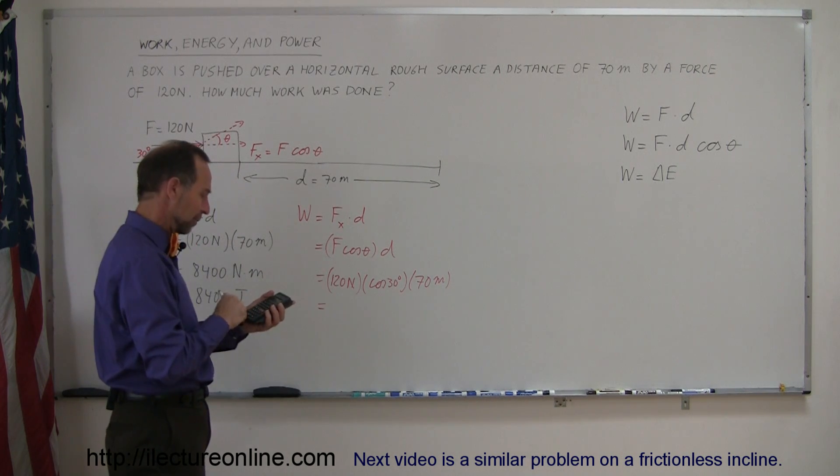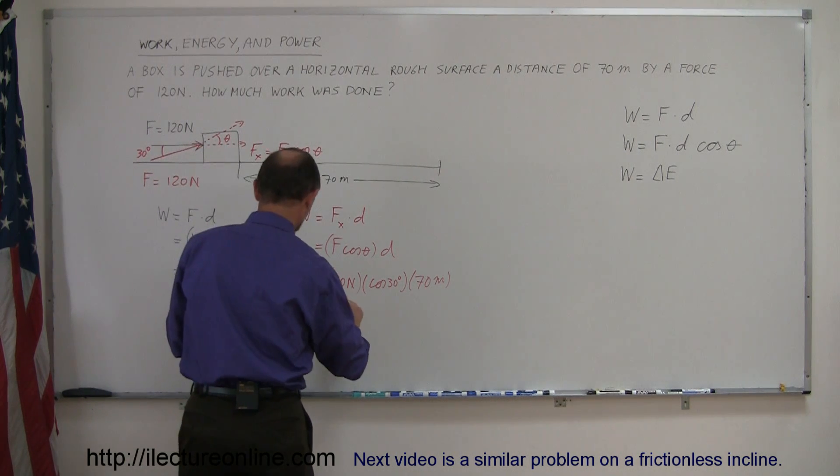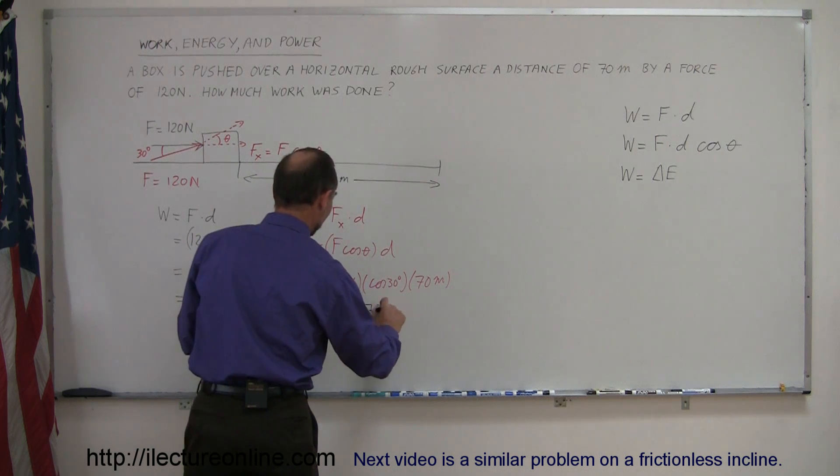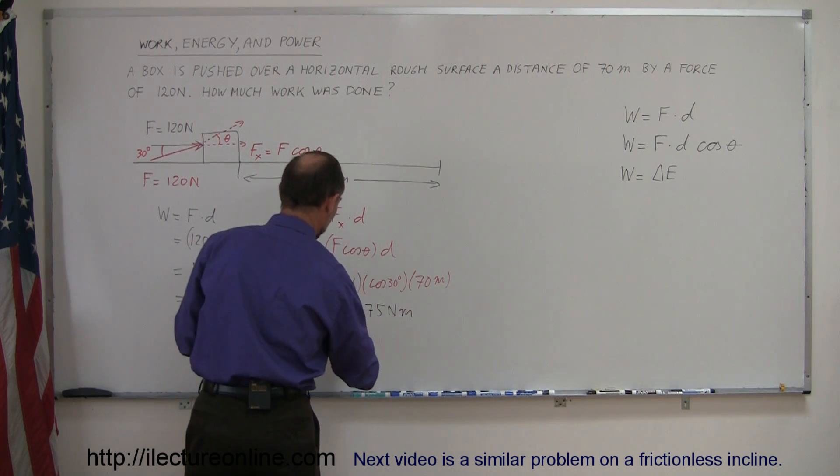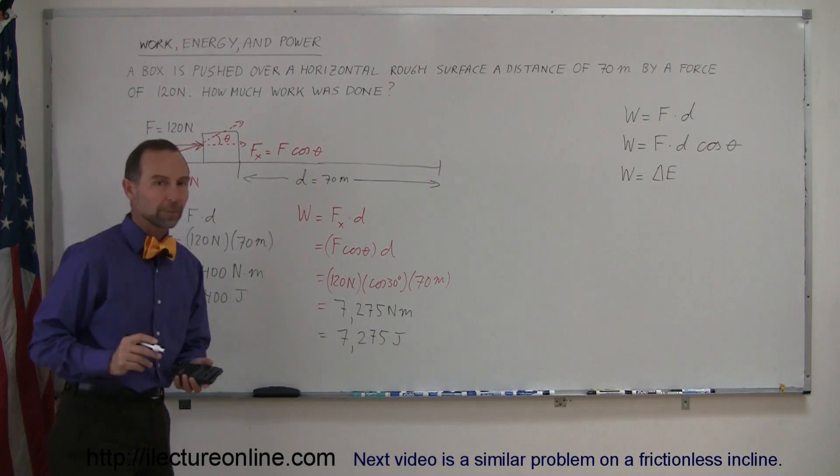Let's see here, let's plug that in real quick, so it's 120 times the cosine of 30 times 70 meters, and in this case we would have a result of 7,275 newton meters, and of course a newton meter is the same as a joule, so that's 7,275 joules. So that's how you work a problem out like that.